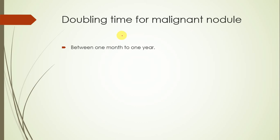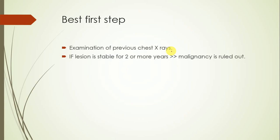Here is an important point to remember: the doubling time for a malignant lesion is about one month to one year. So if a lesion is malignant, we would expect it to double in size within a year.